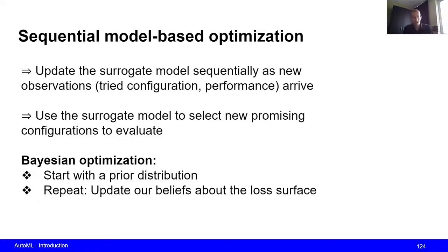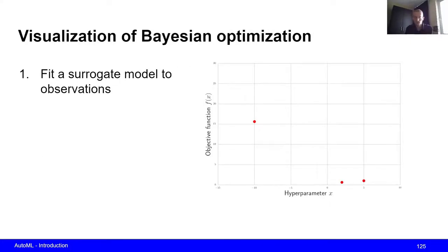Now we can visualize this as follows. So suppose that we are trying to optimize a single hyperparameter, which we have displayed on the x-axis in this figure. Now also suppose that there is an objective function that we want to minimize, and this is displayed on the y-axis.